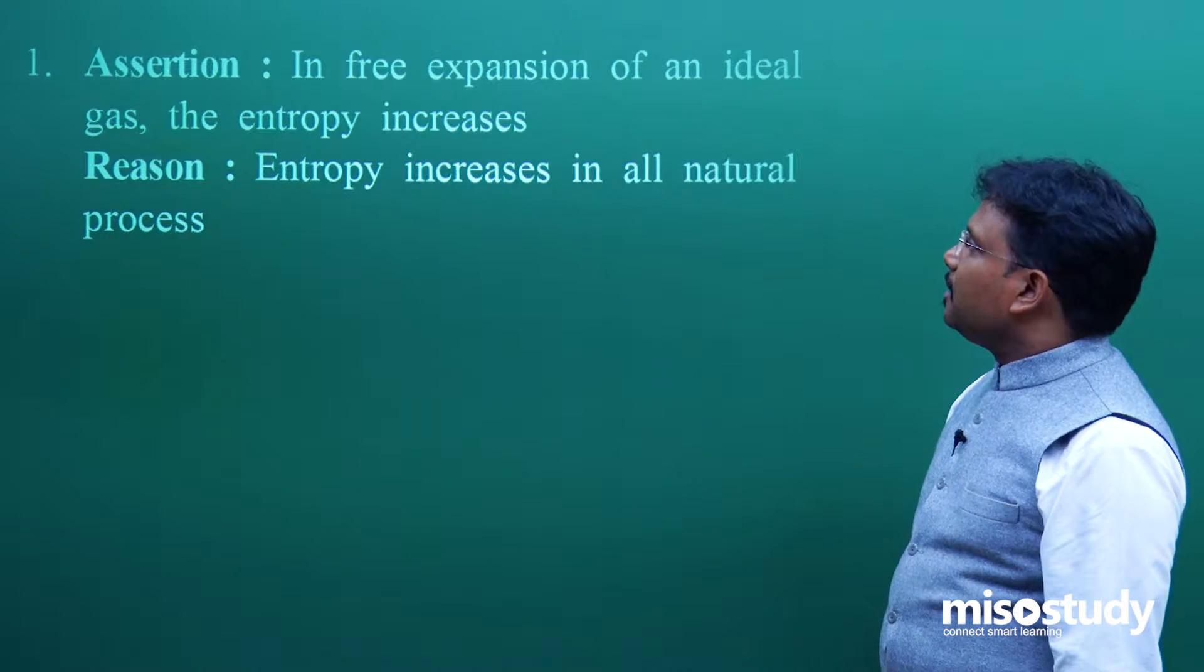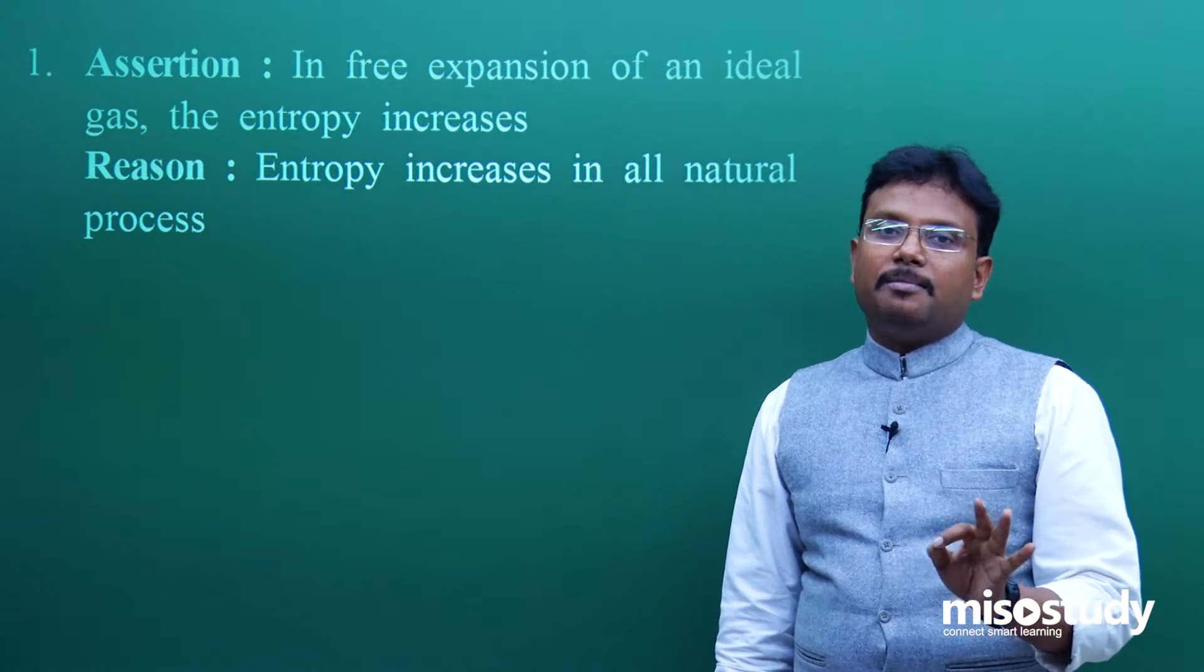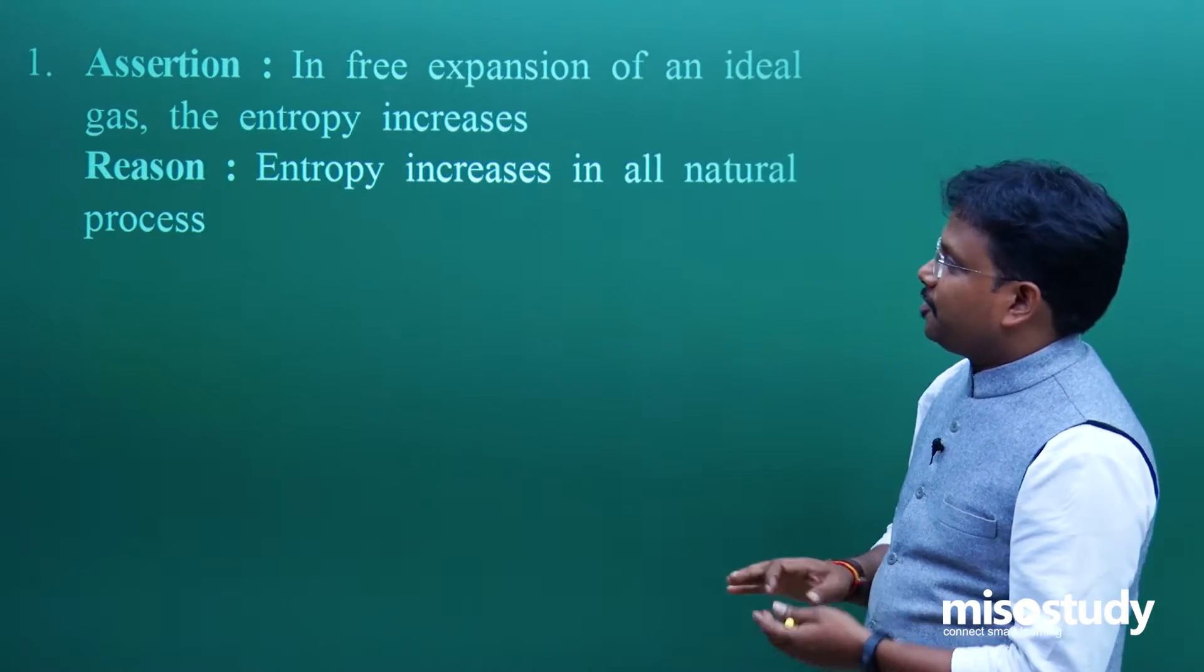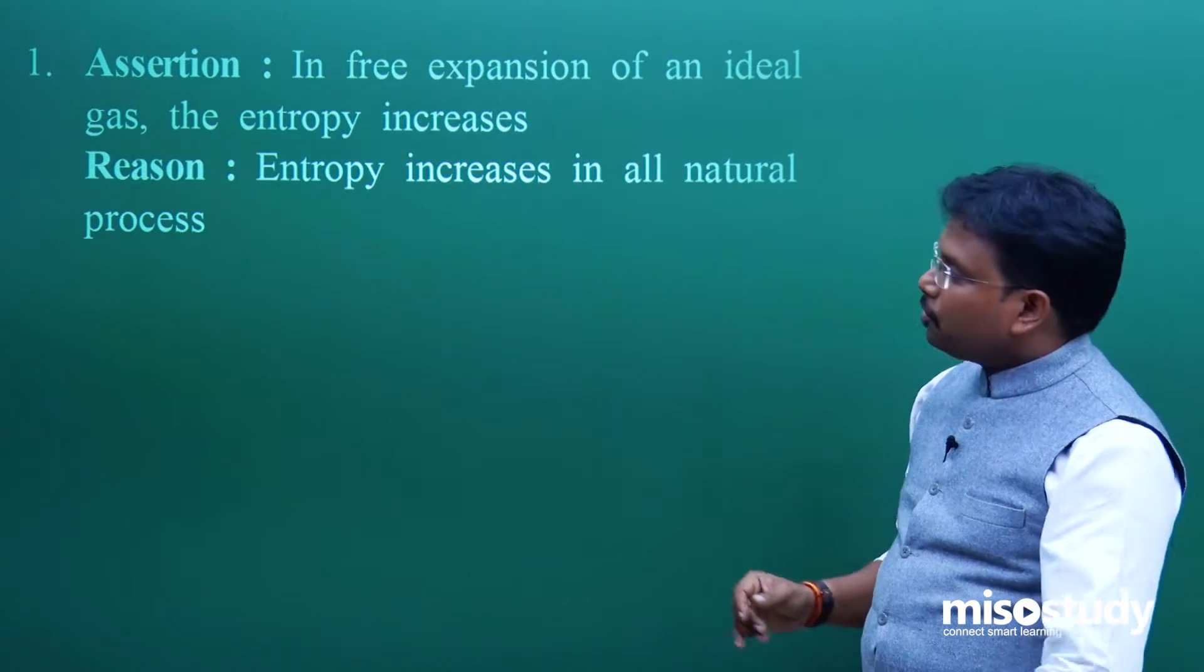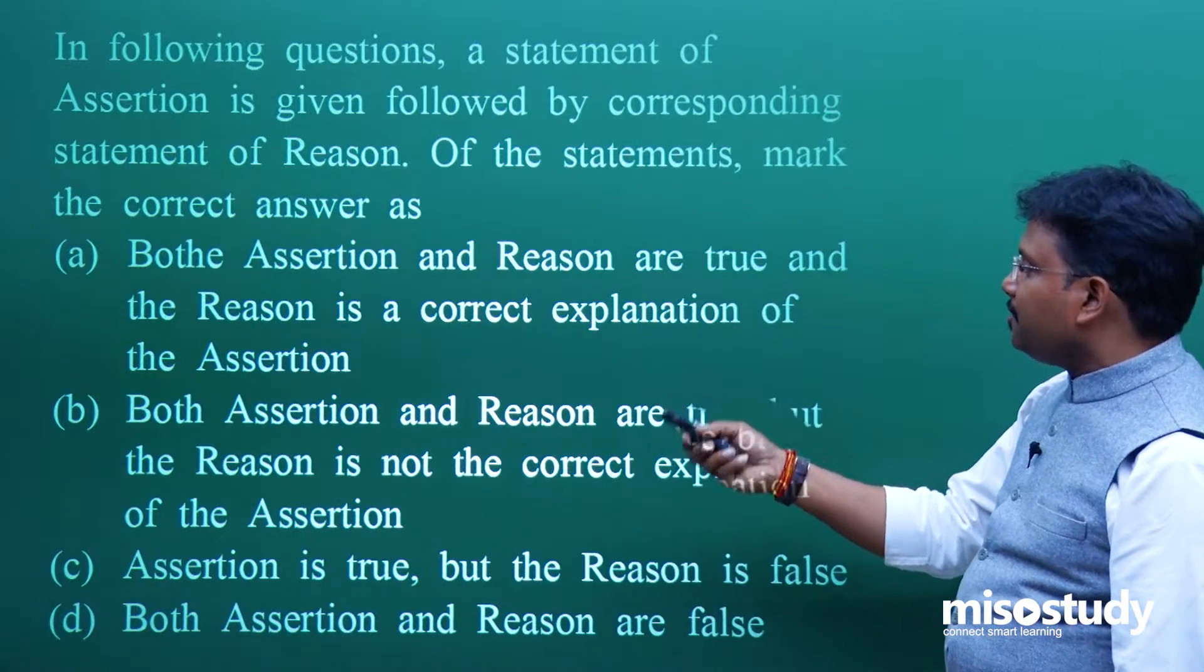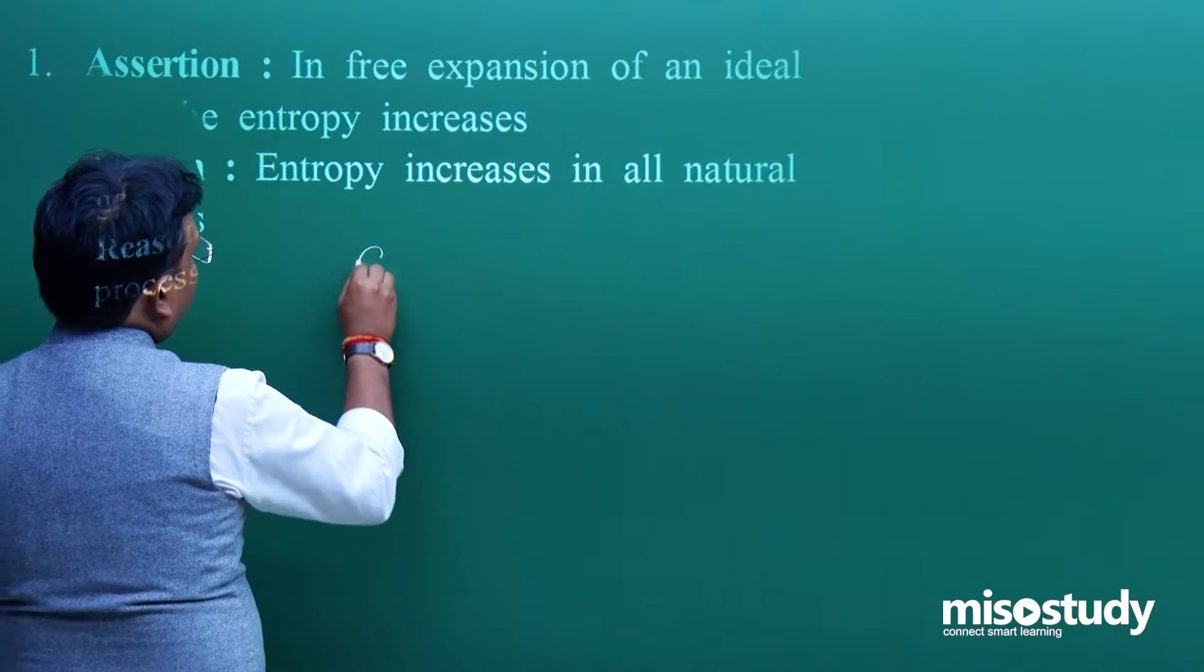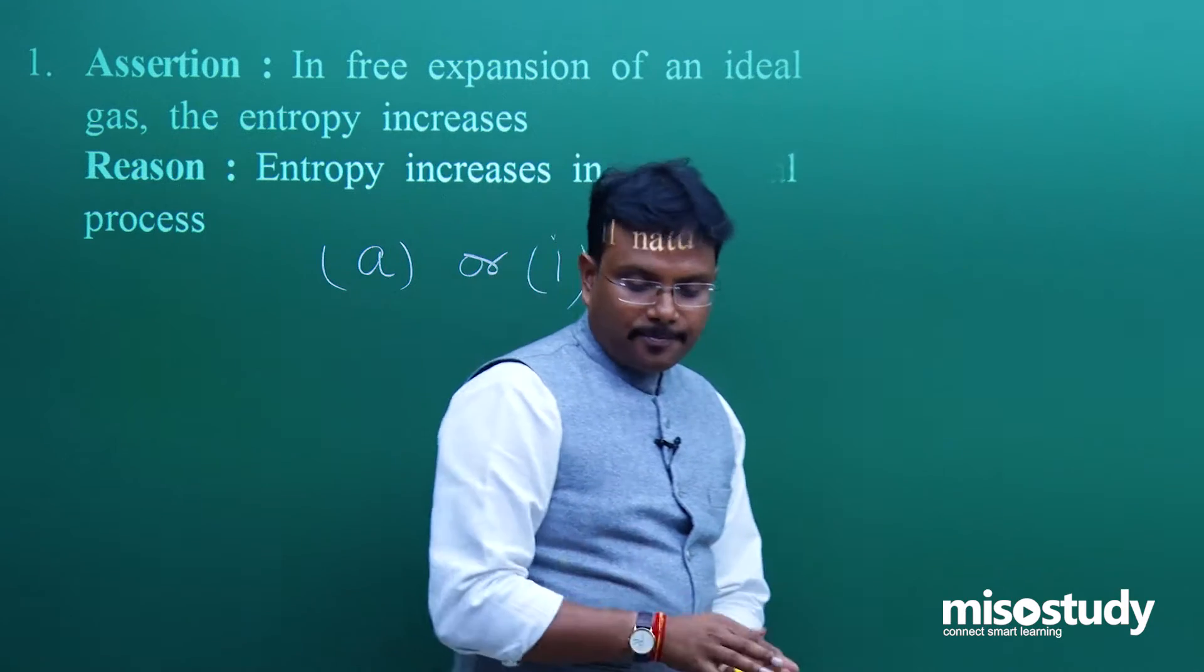Reason: Entropy increases in all natural processes. In your textbooks it is very clearly mentioned that entropy reduction is not a natural process. So both are correct, and the more beautiful aspect is it's also explaining the cause. Both assertion and reason are true, and the reason is a correct explanation of assertion. So the correct choice is A or 1.